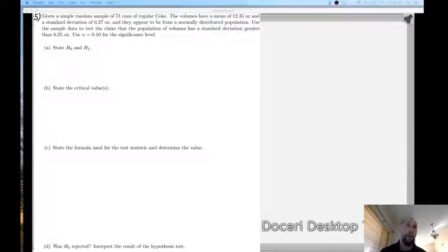Use the sample data to test the claim that the population of volumes has a standard deviation greater than 0.25 ounces. We want to use an alpha of 0.1 for the significance level here.